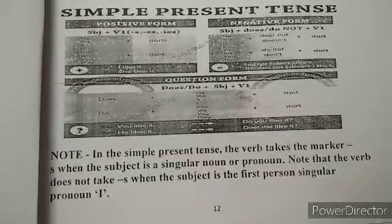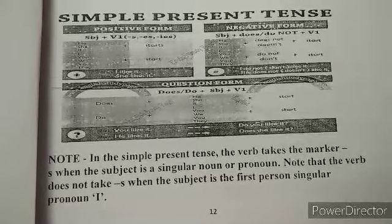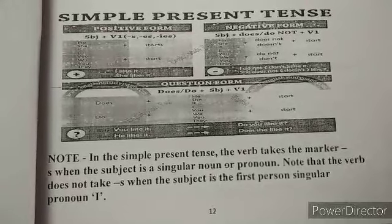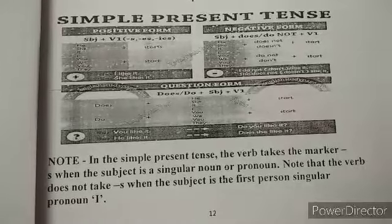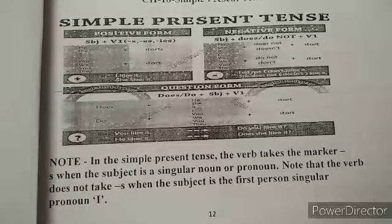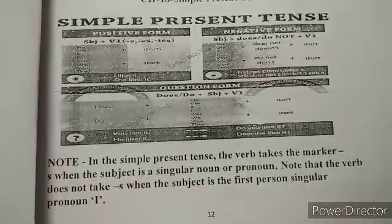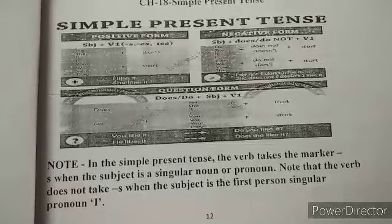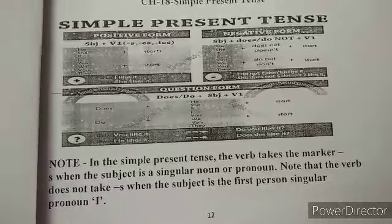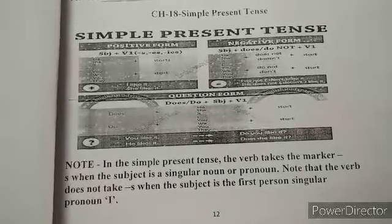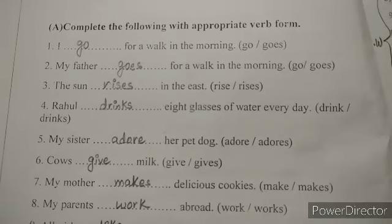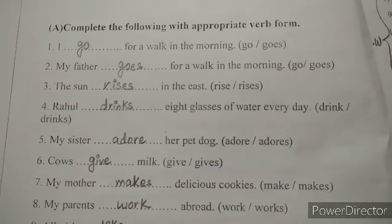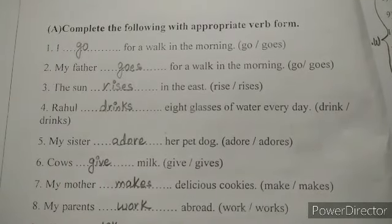Note that the verb does not take 'S' when the subject is in the first person singular pronoun 'I'. Let us try to do one of the exercises for a better understanding. Please turn the page, come to page number 13. Complete the following with the appropriate verb form. I go for a walk in the morning. My father goes for a walk in the morning.